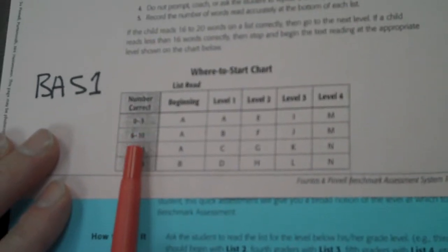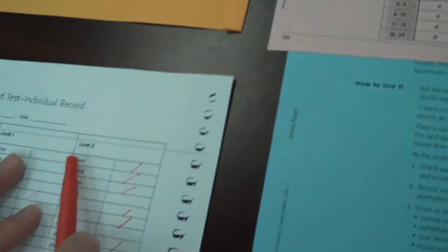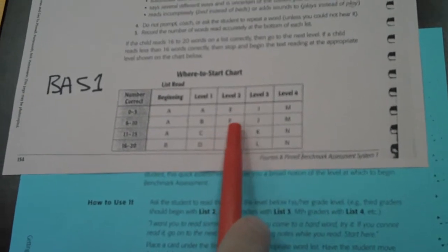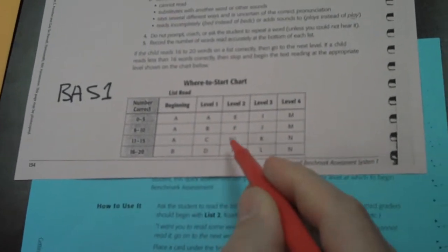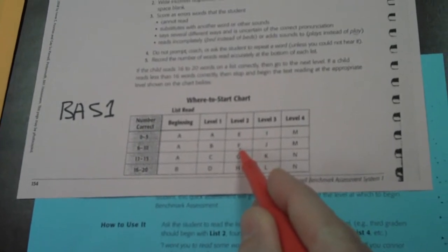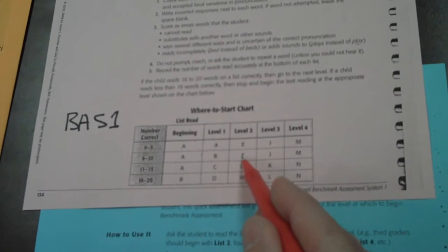So we'll look. Number of correct, 6 to 10. Level 2. 6 to 10 correct. That means you will begin on test F. So you will test this student on test F and I'll show you what that means in the BAS System 1 in just a second.